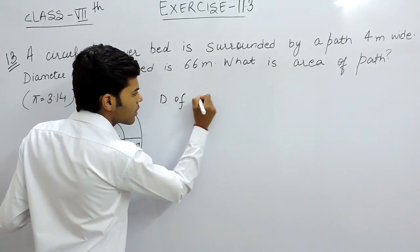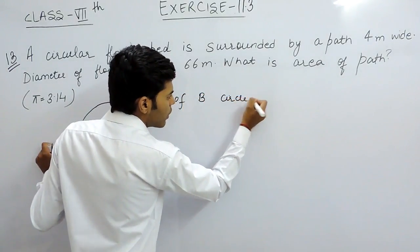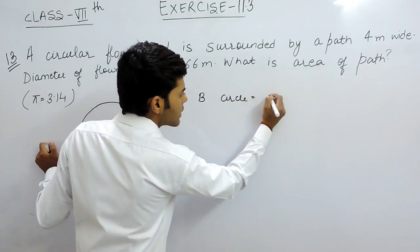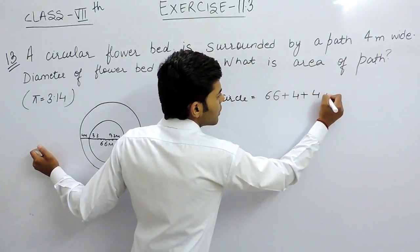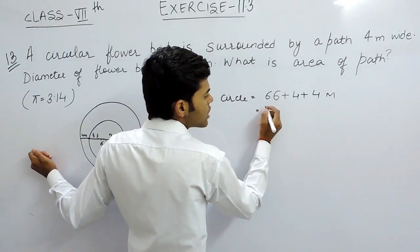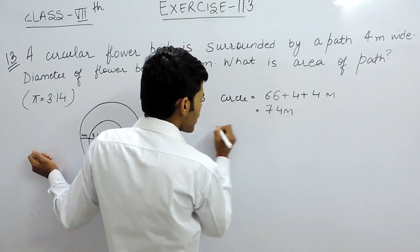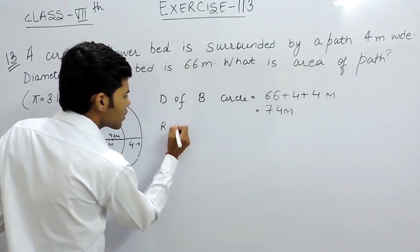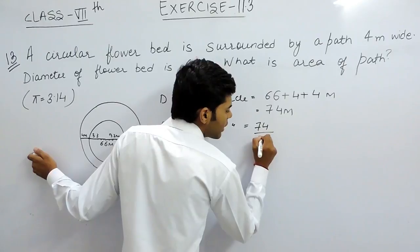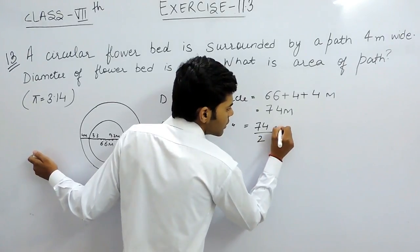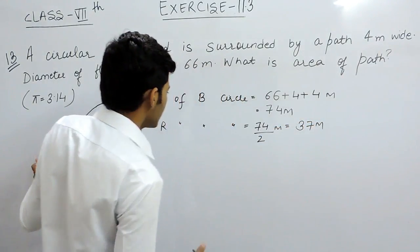The diameter of the bigger circle will be equal to 66 plus 4 plus 4 meters, which equals 74 meters. So the radius of the bigger circle equals 74 divided by 2, which is 37 meters.